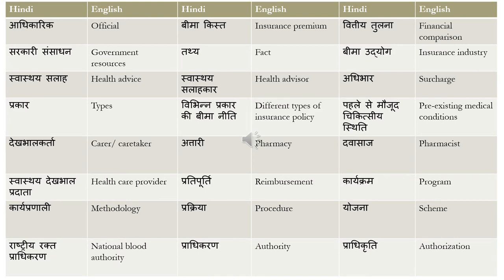Adhibhar means 'surcharge'. Prakar means 'type' — vibhin prakar ki bima niti means 'different types of insurance policies', where vibhin is different, prakar ki bima niti is types of insurance policy. Pehle se maujud chikitsi chikitsayin titi means 'pre-existing medical conditions' — pehle se maujud is pre-existing, chikitsi is medical, and titi is conditions.